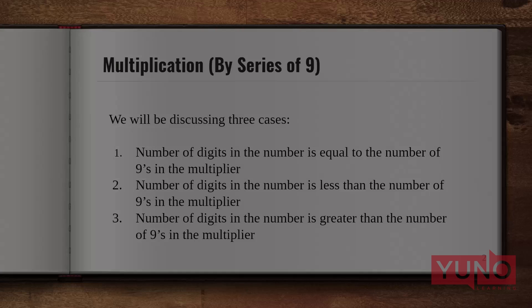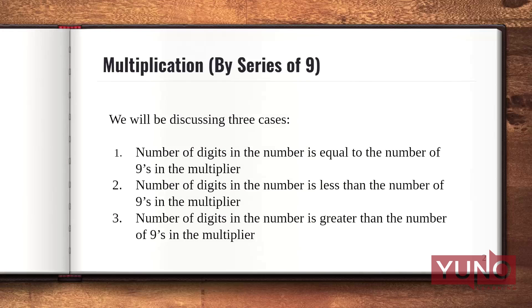We will be considering 3 cases here. The first one is: number of digits in the number is equal to the number of 9s in the multiplier. Case 2 is: number of digits in the multiplicand is less than the number of 9s in the multiplier. Case 3 is: number of digits in the multiplicand is greater than the number of 9s in the multiplier.